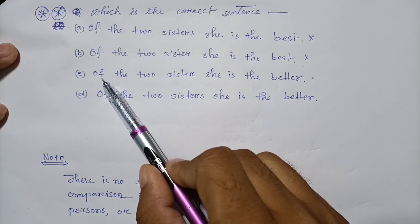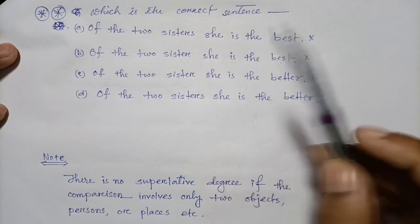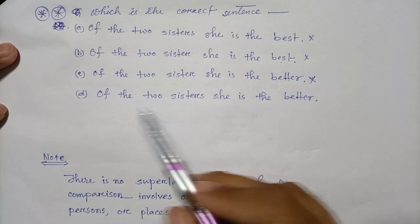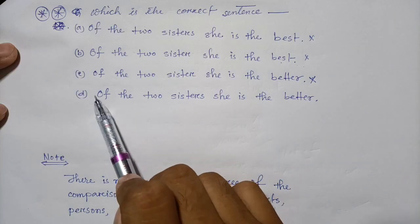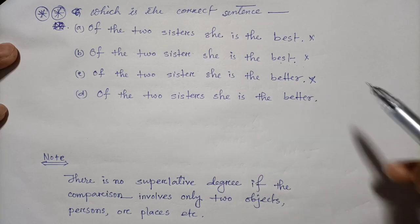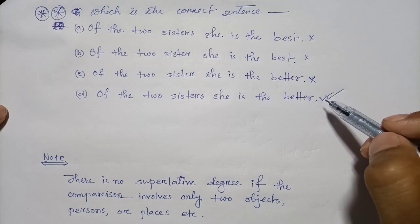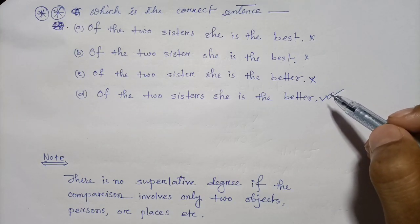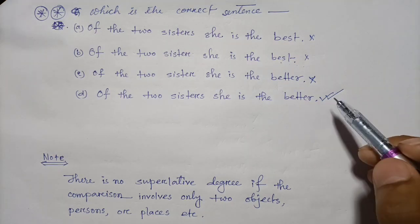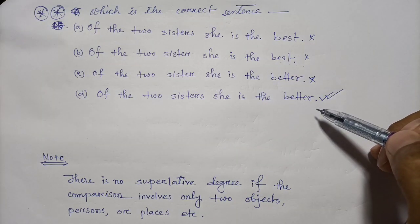Options C and D both say 'of the two sisters.' But option C is wrong. The correct answer is D: 'She is the better of the two sisters.' When comparing only two, use comparative degree ('better'), not superlative ('best'). This is the right sentence.